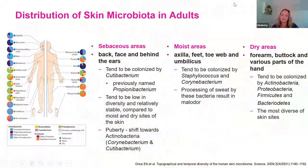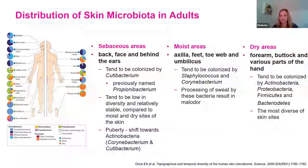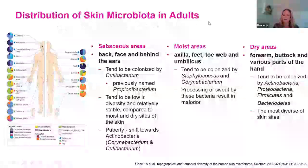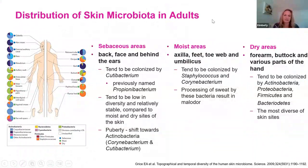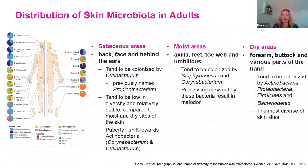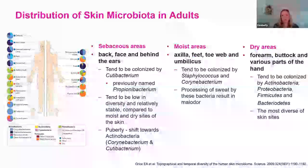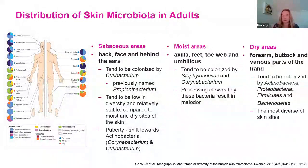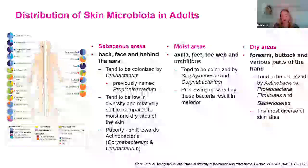At the beginning of this research area, we started to understand the distribution of the skin microbiota in adults. This was work done by Elizabeth Grice as part of the Human Microbiome Project many years ago. Essentially what they found was on an adult — meaning someone 20 to 40 years old, a middle-aged or younger adult after puberty.